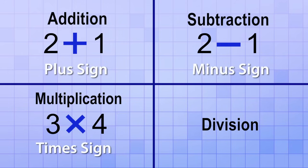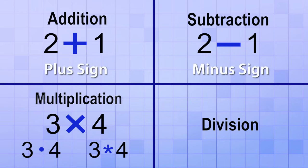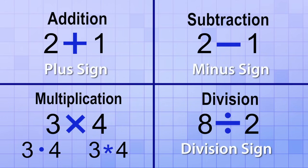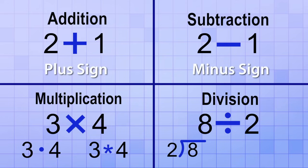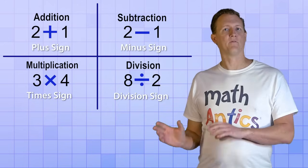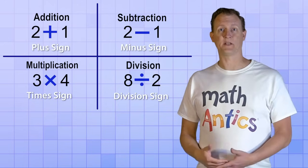Sometimes other symbols, like a dot or an asterisk, are also used to show multiplication. And finally, for division, we use this symbol, which we usually just call the division sign. And we read it like this: 8 divided by 2. There are several other types of division signs that are commonly used too. This one is used to do long division. And the fraction line is also a really useful way to show division. And so is a slash. But in this video, we're just going to focus on these four main symbols for our arithmetic operations: plus, minus, times, and divided by.